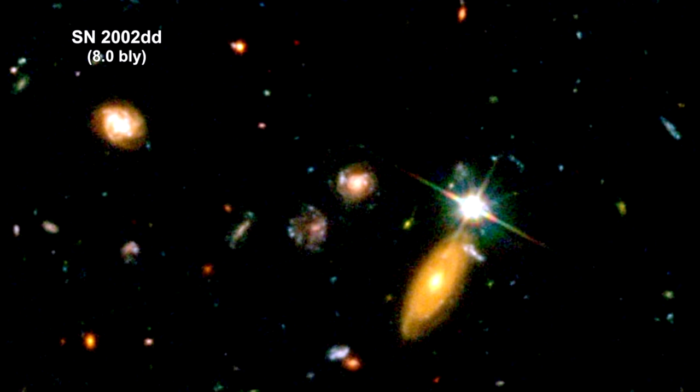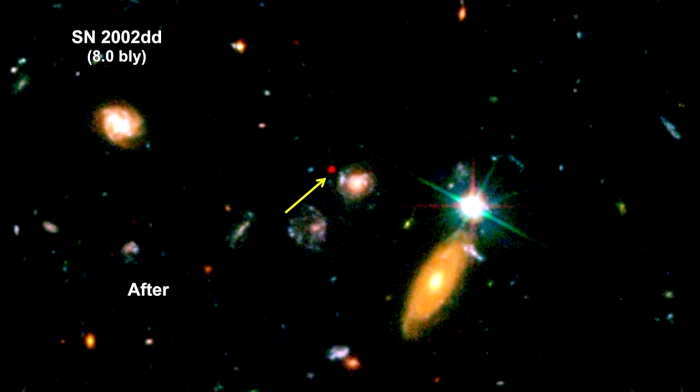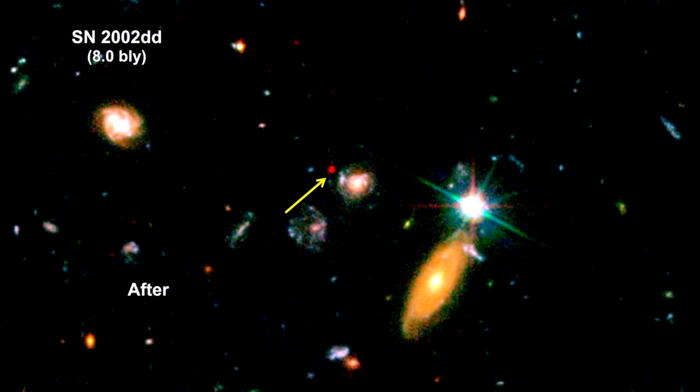Hubble is a supernova machine for probing the early universe. Here's a Type 1A it found that's approximately 8 billion light-years from Earth.